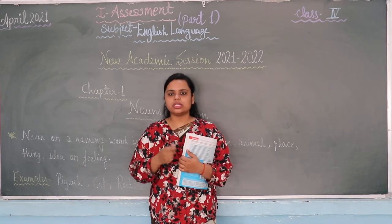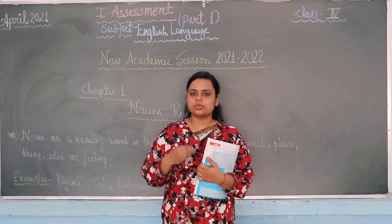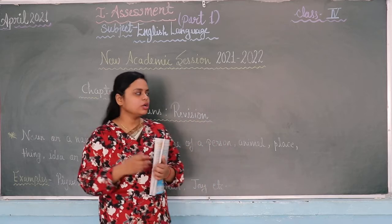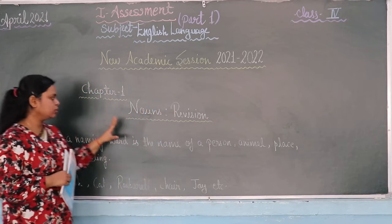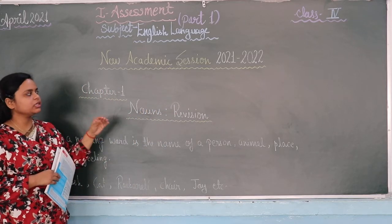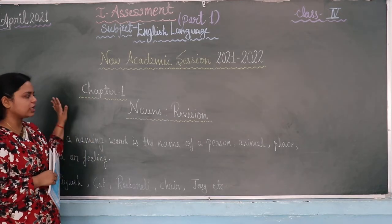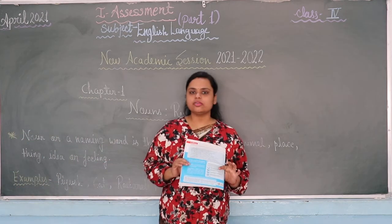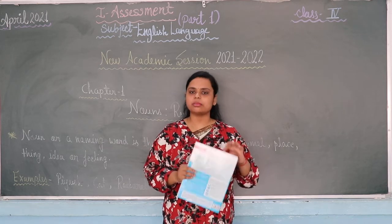In the whole universe, all the things which are present in the universe have a unique name. For example, this is your blackboard. And this is your book — a very important part of everyone's life, because it is a knowledgeable thing and it's called a book.